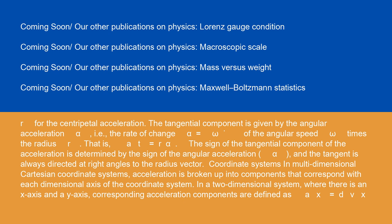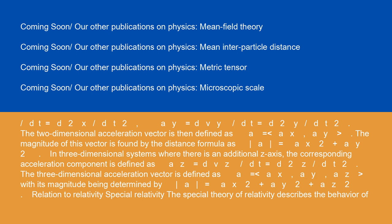In multidimensional Cartesian coordinate systems, acceleration is broken up into components corresponding to each dimensional axis. In a two-dimensional system with x-axis and y-axis, the components are: aₓ = dvₓ/dt = d²x/dt², and aᵧ = dvᵧ/dt = d²y/dt². The two-dimensional acceleration vector is a = (aₓ, aᵧ), with magnitude a = √(aₓ² + aᵧ²). In three-dimensional systems, the additional component is: a_z = dv_z/dt = d²z/dt², and the three-dimensional vector is a = (aₓ, aᵧ, a_z), with magnitude a = √(aₓ² + aᵧ² + a_z²).